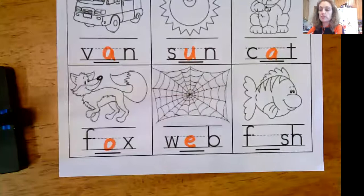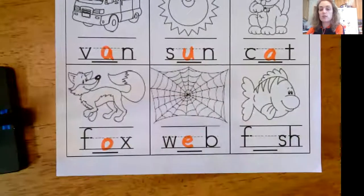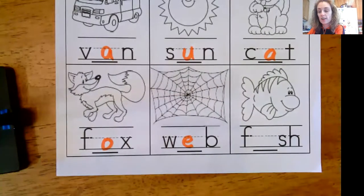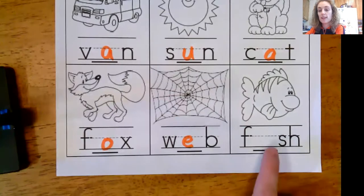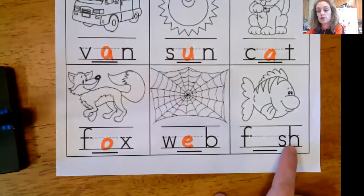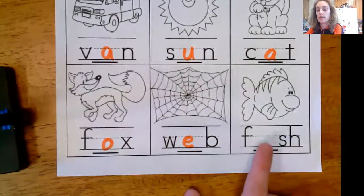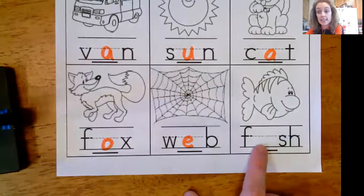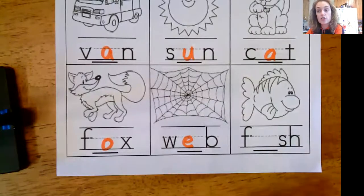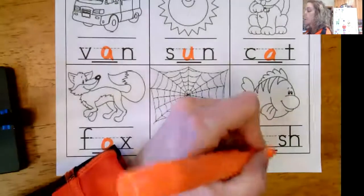And then my last picture here is fish. Go ahead and say it — fish. And our sounds: F, 'ih,' SH. In the middle, that sound I'm missing is 'ih' — like an itch. So I know it's the letter I, so I'm going to write I.